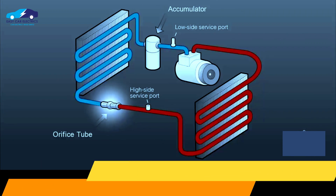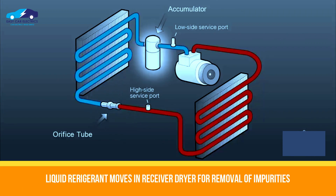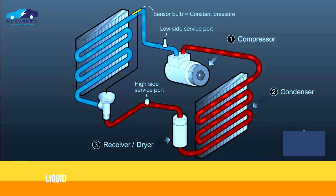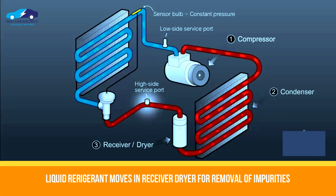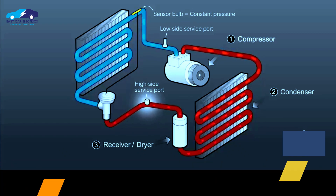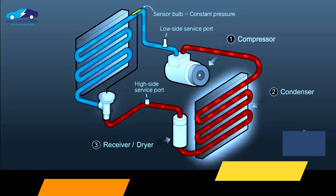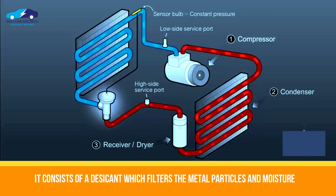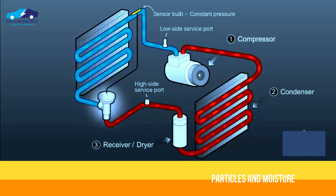At this stage, the liquid refrigerant coming from the condenser moves into the receiver dryer accumulator to remove impurities and debris. It consists of a desiccant and filter that filters metal particles and moisture from the refrigerant and makes it clean.